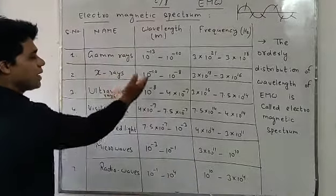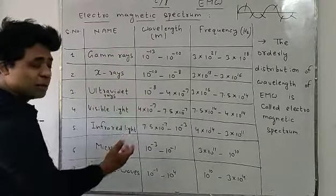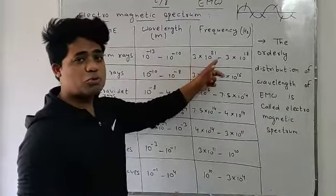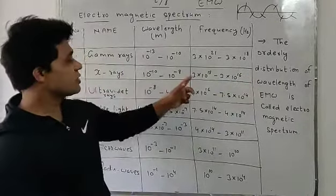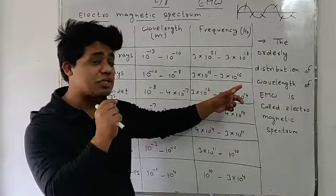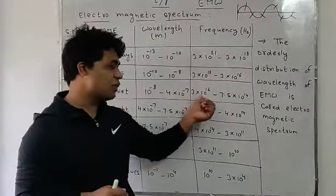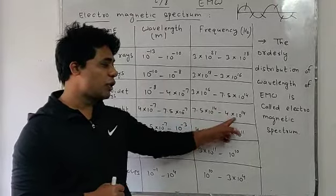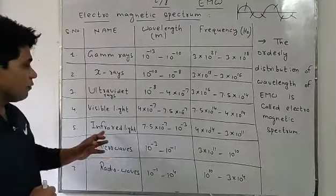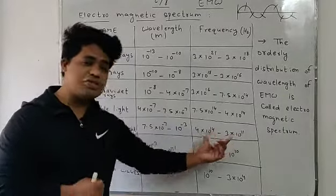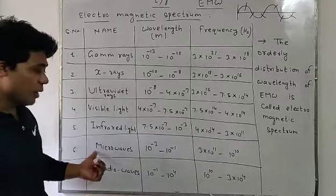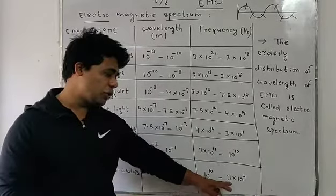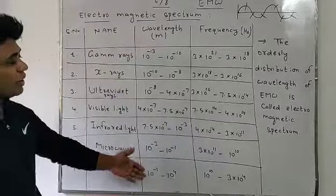These are the wavelengths of gamma rays, X-rays, ultraviolet rays, visible light, infrared, microwave, and radio waves. Their corresponding frequencies are: gamma rays — 3×10²¹ to 3×10¹⁸ Hz; X-rays — 3×10¹⁸ to 3×10¹⁶ Hz; ultraviolet — 3×10¹⁶ to 7.5×10¹⁴ Hz; visible light — 7.5×10¹⁴ to 4×10¹⁴ Hz; infrared — 4×10¹⁴ to 3×10¹¹ Hz; microwave — 3×10¹¹ to 10¹⁰ Hz; radio waves — 10¹⁰ to 3×10⁴ Hz.